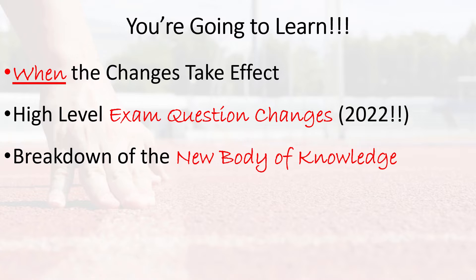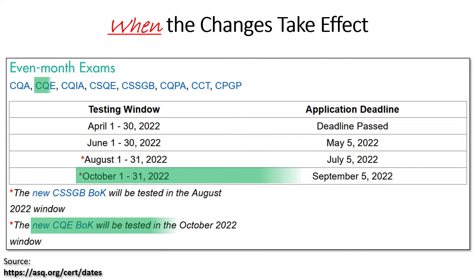I want to go through specifically all seven pillars of the Body of Knowledge and talk about which topics are being added and removed and emphasized or de-emphasized on the actual exam. So let's start with when the exam changes take effect. If your exam is scheduled after October 1st, this new Body of Knowledge will apply to you. But if you're taking the exam in April, June, or August, you're totally fine — don't worry about any of these changes. But remember, if your exam is after October 1st, 2022 or later, these changes will apply to you.